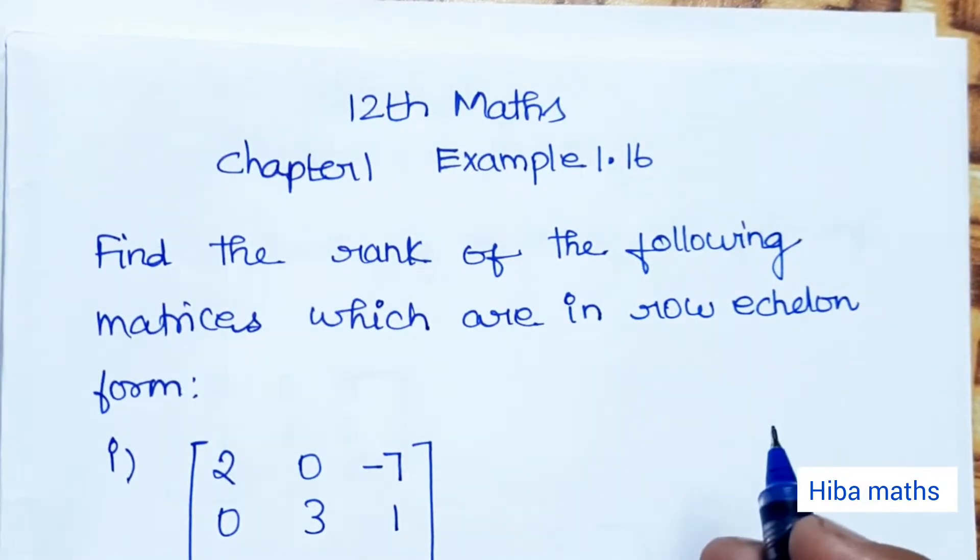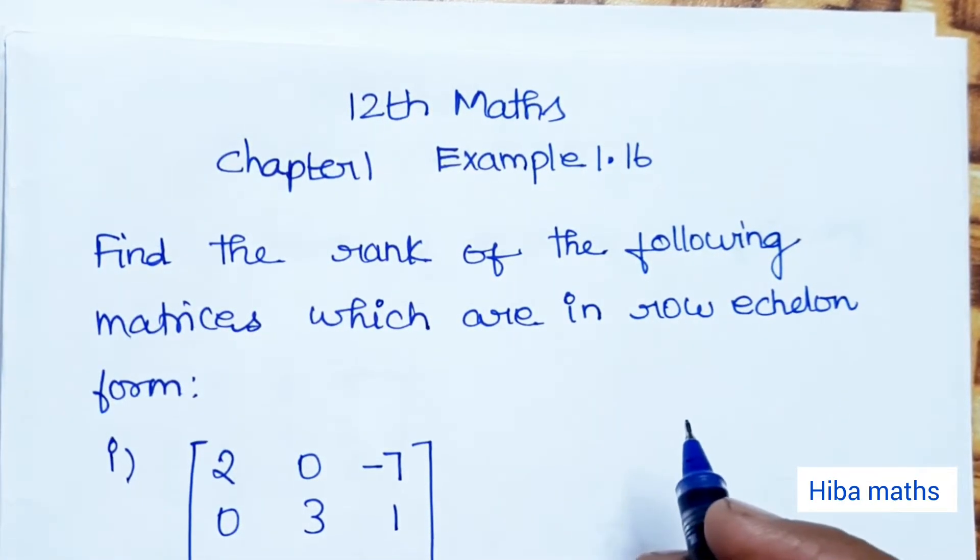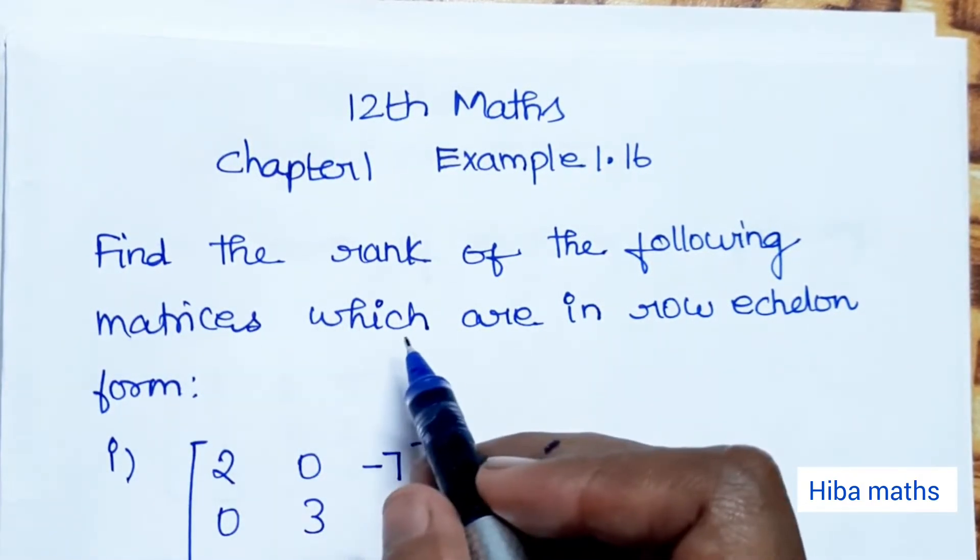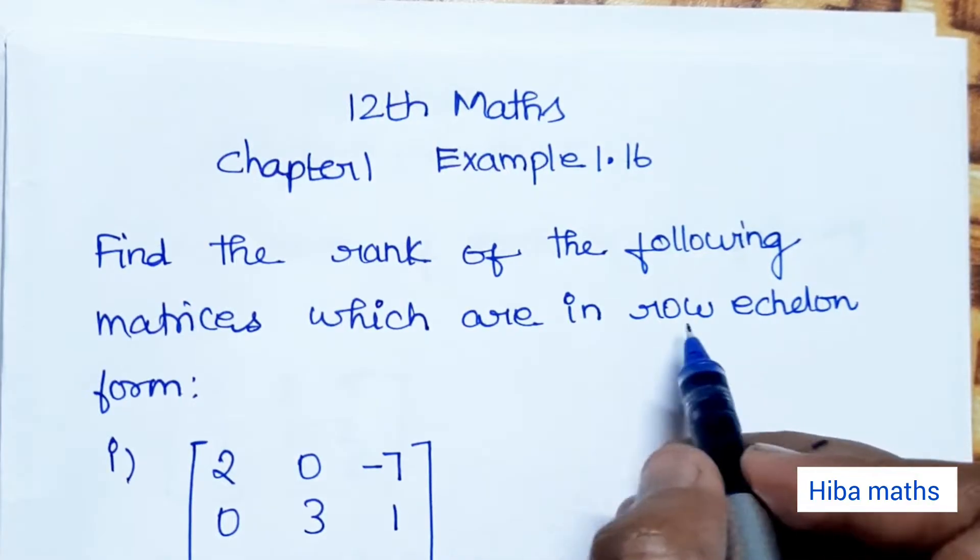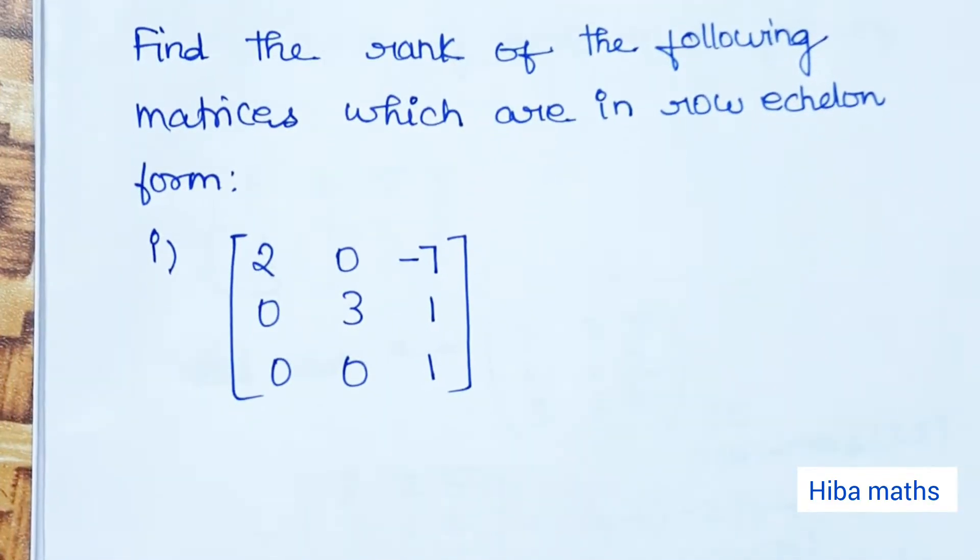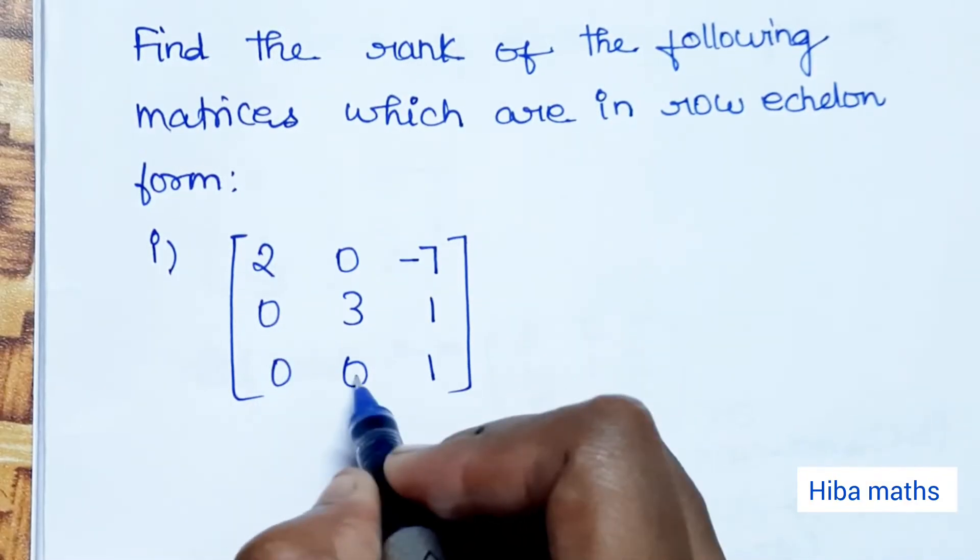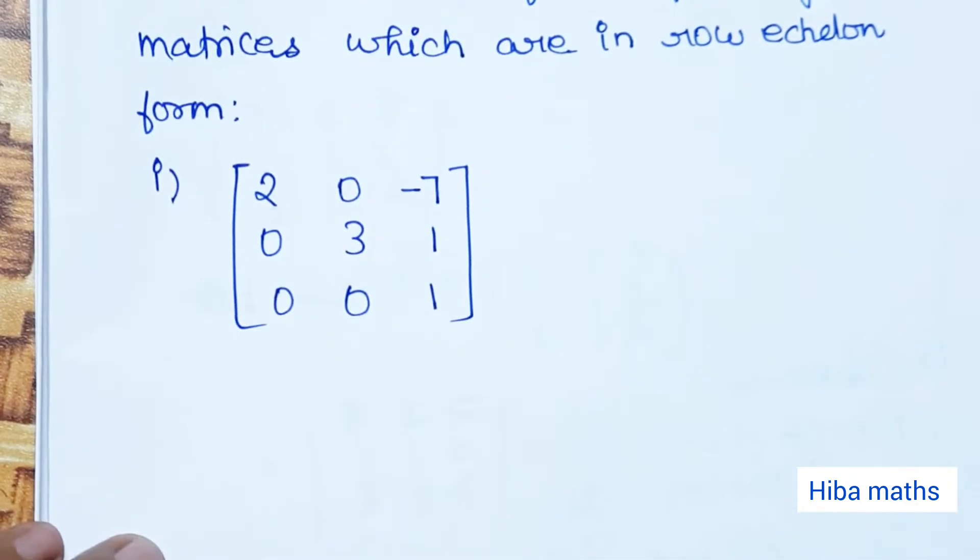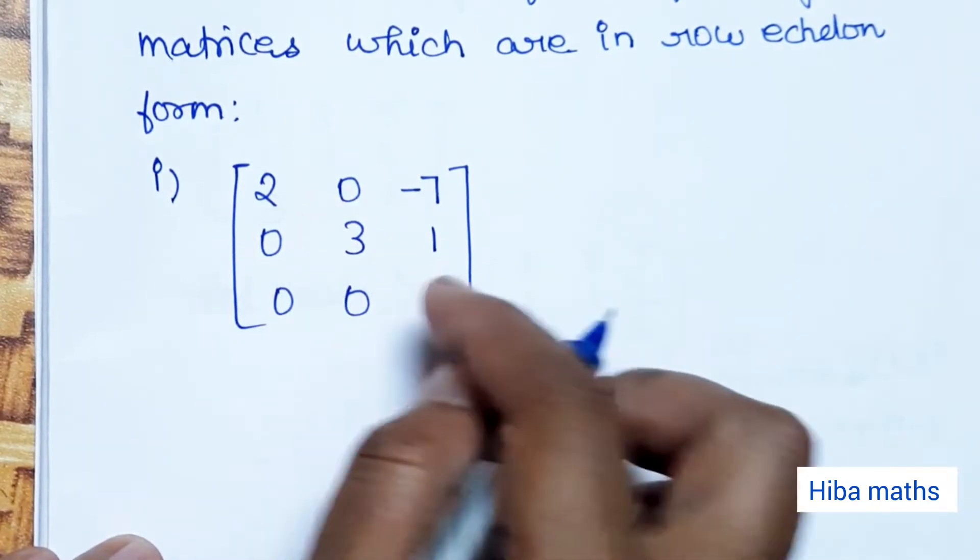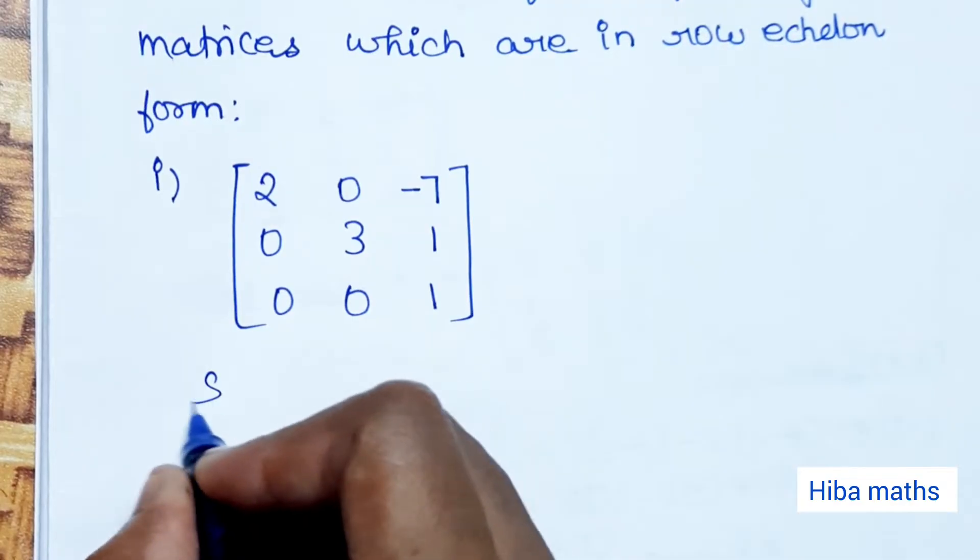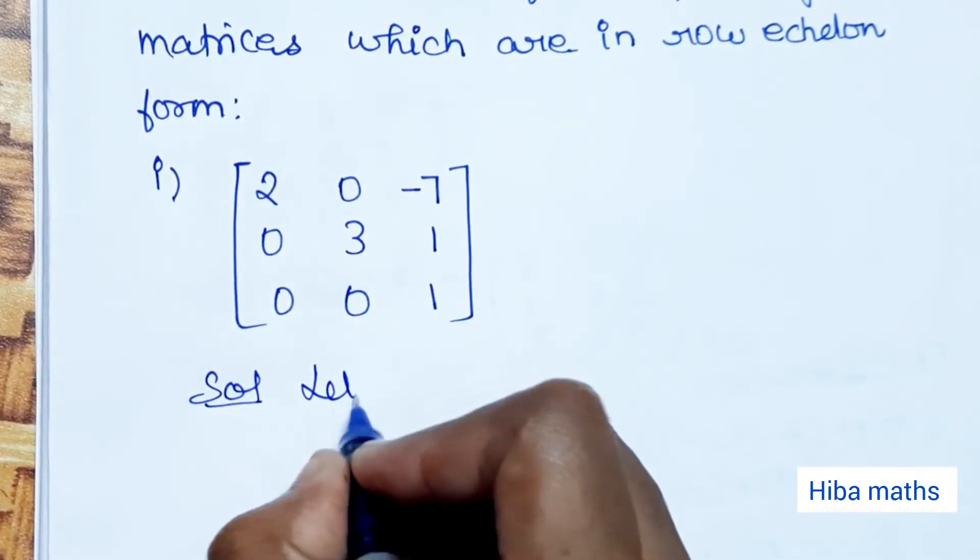Hello students, welcome to Hiba Maths. 12th standard Maths, Chapter 1, Example 1.16. Find the rank of the following matrices which are in row echelon form. Here we have 3 matrices in row echelon form, and we can determine the rank from this form.